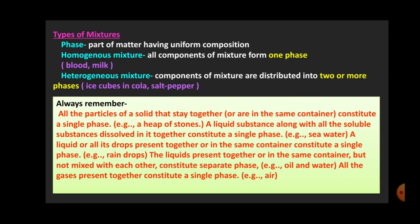There are certain things to remember about the different types of mixtures. When all the particles of a solid stay together or are in the same container, they constitute a single phase. The first type is solid and solid — for example, a heap of stones. Next, a liquid substance along with all the soluble substances dissolved in it together constitute a single phase — like seawater, where different soluble substances are dissolved but still form a single phase.